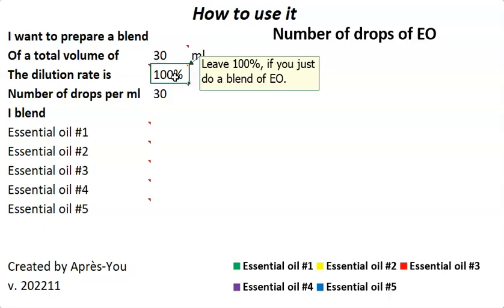Then I will choose the dilution rate. The dilution rate will be the proportion of essential oils that you have in your bottle — the total volume. It could be 100% when it's a blend of essential oils only, but if you use a carrier oil, alcohol, or gel, maybe you can change this number. I will show you afterwards.